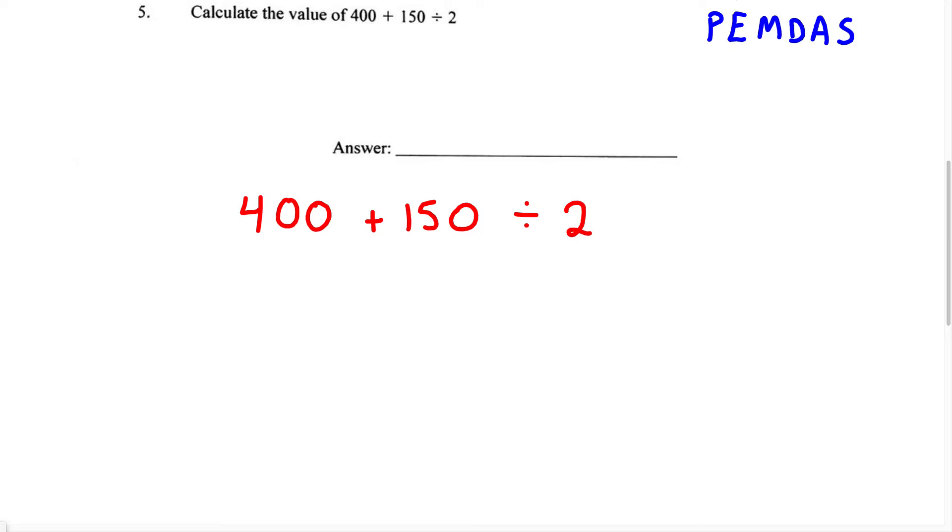Now for the order of operations, we must remember that parentheses are always going to come first. Then we have exponents or square roots. Then we're going to have multiplication or division. They're both on the same level, so depending which comes first, that's what we're going to do first. And then finally we have addition and subtraction. That's on the last level, and depending on which one comes first, that's what we're going to do first.